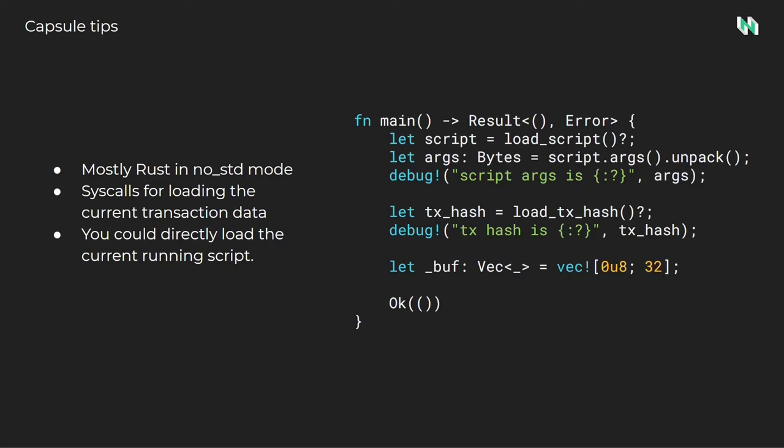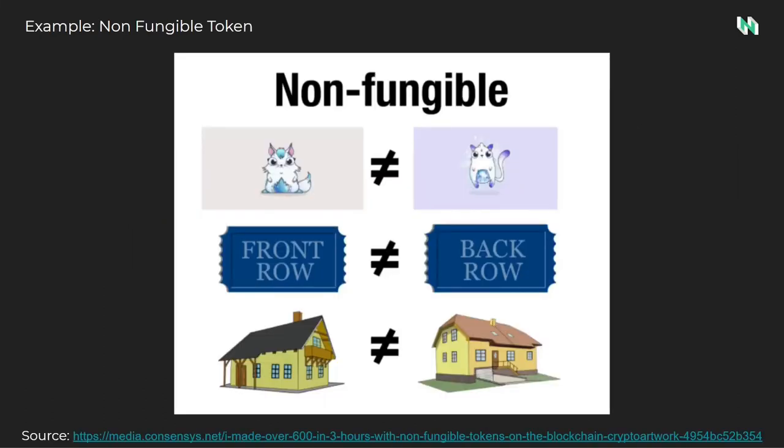At present time, Capsule scripts operate using no-standard mode, meaning the Rust standard library is not used. However, most of the regularly used structures are still available through libraries. Common structures such as vectors and BTree maps are available, and the number of new libraries is always growing.